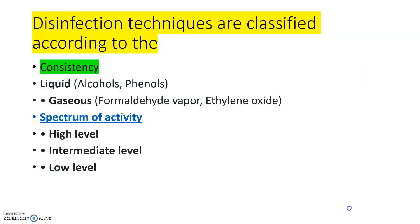Disinfection techniques can be classified according to their consistency. They can be either liquid — such as alcohols or phenols — or gaseous — such as formaldehyde vapor or ethylene oxide. Disinfectants can also be classified based on their spectrum of activity: high level, intermediate level, and low level.